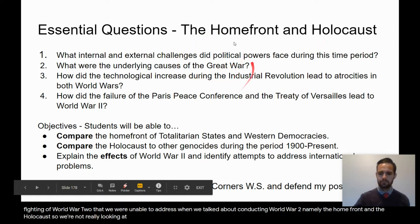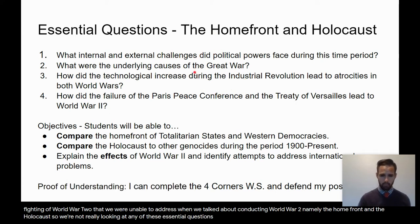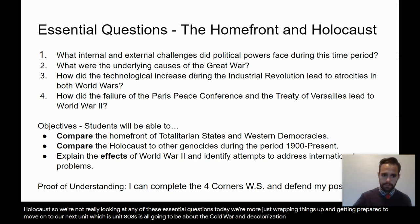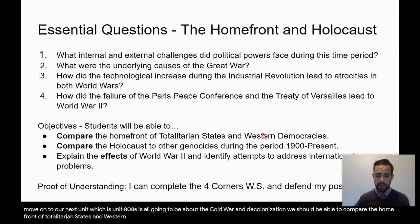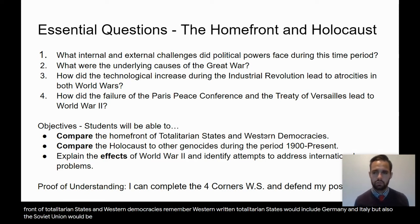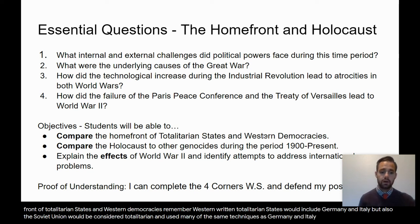We're not really looking at any of the essential questions today. We're more just wrapping things up and getting prepared to move on to Unit 8, which is all going to be about the Cold War and decolonization. We should be able to compare the home front of totalitarian states and Western democracies. Western democracies are places like the United States and Britain. Totalitarian states would include Germany and Italy, but also the Soviet Union.